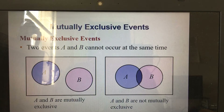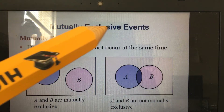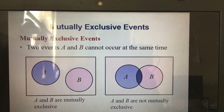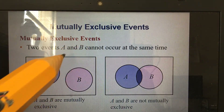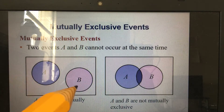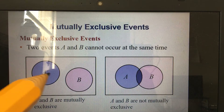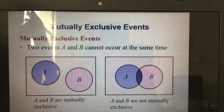We call them mutually exclusive events because they cannot occur at the same time. For example, look at these two events A and B — they are separate, they cannot happen at the same time. A is separate, B is separate, so we say that A and B are mutually exclusive.